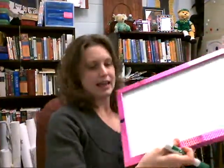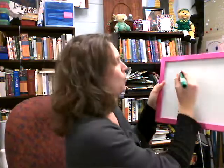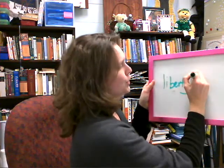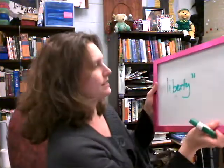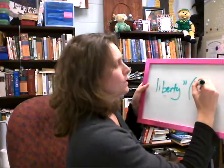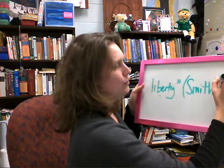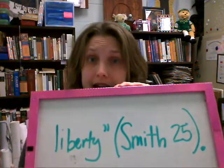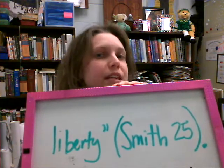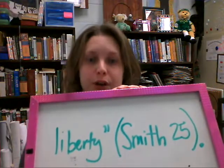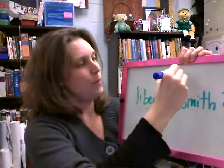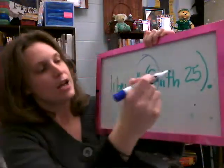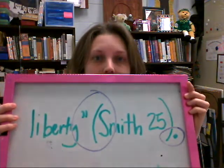The basic format of MLA in-text citation: you end your quote — let's say the last word of your quote was 'liberty' — you make a parenthesis, author's last name, page number, close parenthesis, then the period. That's the basic format of parenthetical documentation. Your book outlines that, and I also gave you some examples in the instruction section of Blackboard. Please note there's no punctuation inside the parenthesis — your punctuation comes at the end of the sentence after the parenthesis. You'll see that in your textbook.